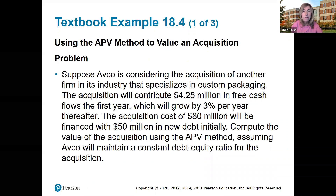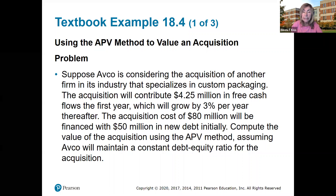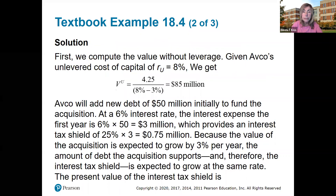We have another example — valuing an acquisition where there is some growth. Again, with AVCO: the acquisition will contribute $4.25 million in free cash flow in the first year and grow by 3% per year thereafter. The acquisition cost of $80 million will be financed with $50 million in new debt. We will use the APV method, assuming AVCO will maintain a constant debt-equity ratio for the acquisition. First, we compute the value of the firm without leverage using the unlevered cost of capital of 8%. The value of the unlevered firm is $4.25 million divided by (8% R_U minus 3% growth), which equals $85 million.